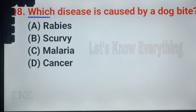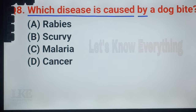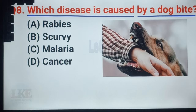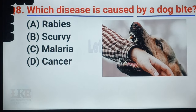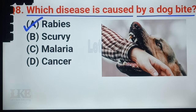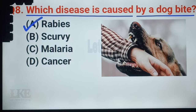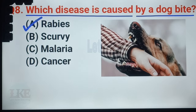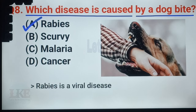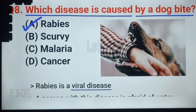Question number 27: which disease is caused by a dog bite? A. Rabies, B. Carbis, C. Malaria, D. Cancer. Right answer: option A, Rabies. From the bite of a mad dog, diseases can happen in our body like rabies, infection, nerve or muscle damage, etc. Rabies is a viral disease. A person with this disease is afraid of water.